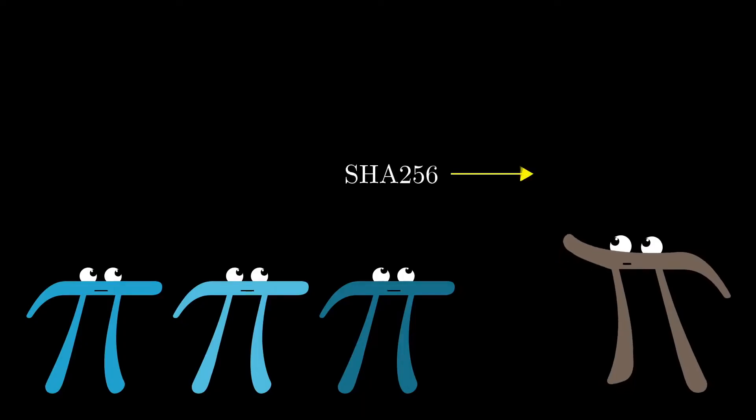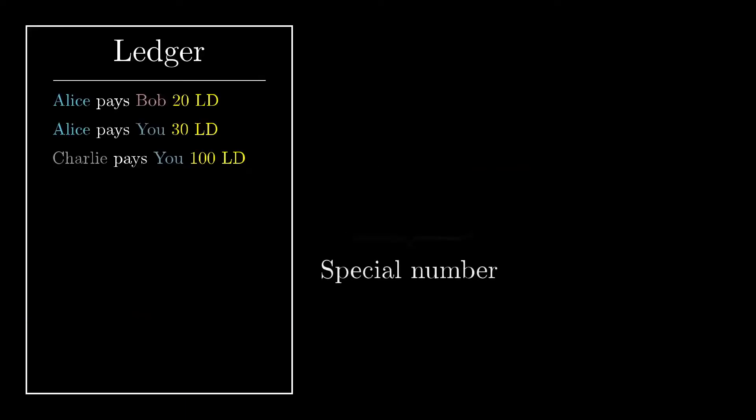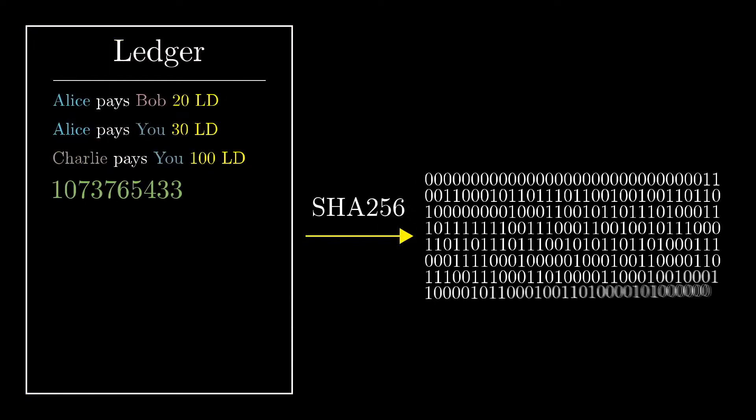For right now, our focus will just be on how such a function can prove that a particular list of transactions is associated with a large amount of computational effort. Imagine someone shows you a list of transactions and they say, 'Hey, I found a special number so that when you put that number at the end of this list of transactions and apply SHA-256 to the entire thing, the first 30 bits of that output are all zeros.'